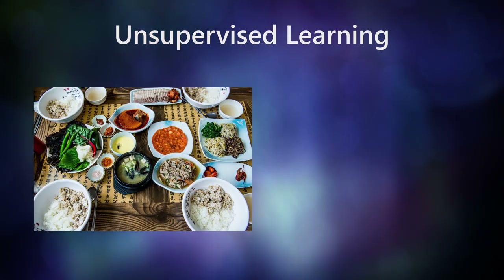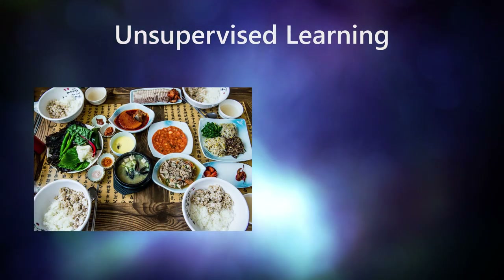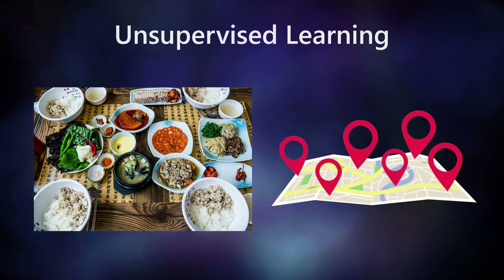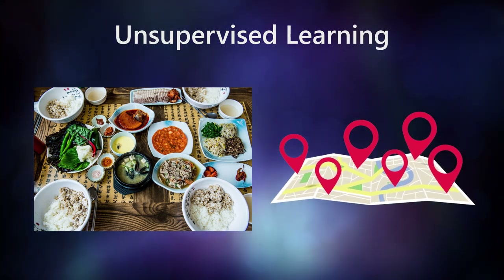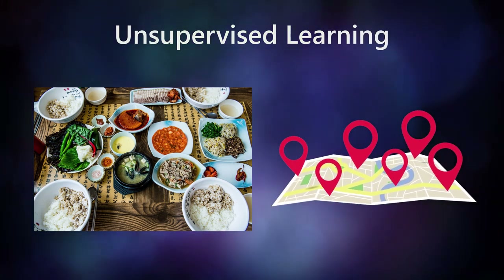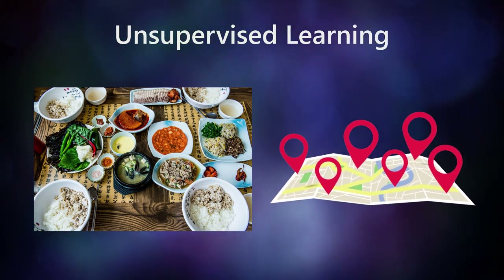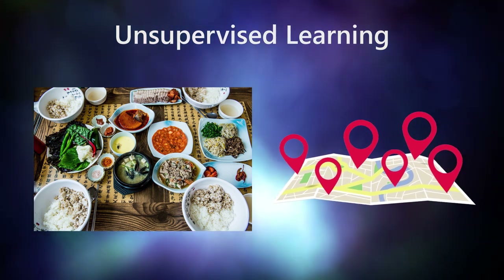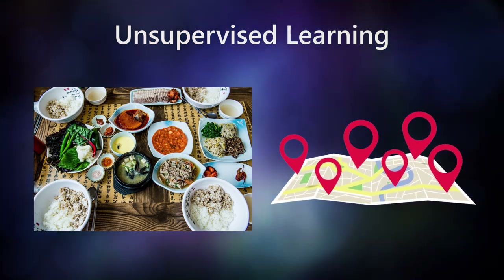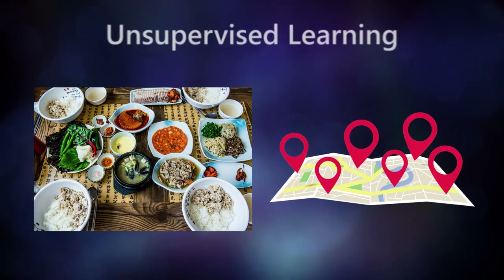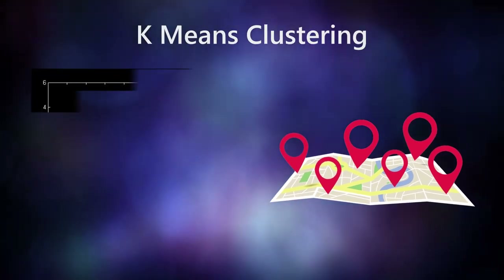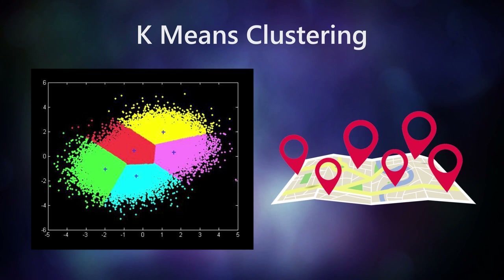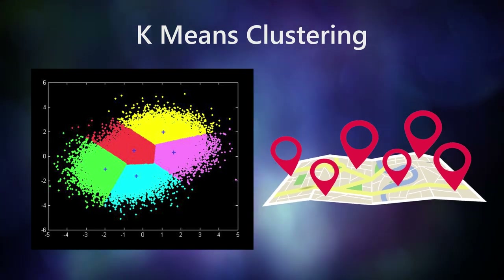Say you're a Korean barbecue franchise and you're moving to a new city. You've got the budget to open up three locations. You've got a marketing list of thousands of people who have shown interest in Asian food. Where do you put your restaurants so they are central to the most potential customers? Well, that's exactly what k-means clustering is designed to solve. Let's look at the algorithm.